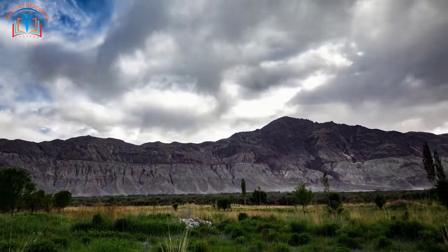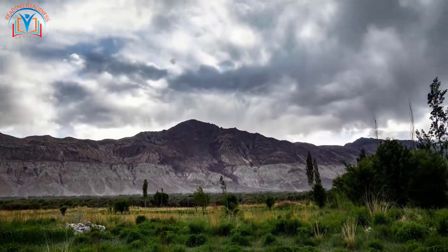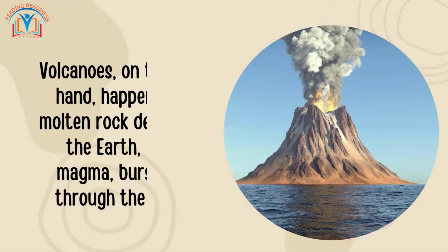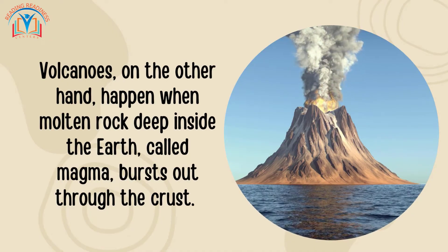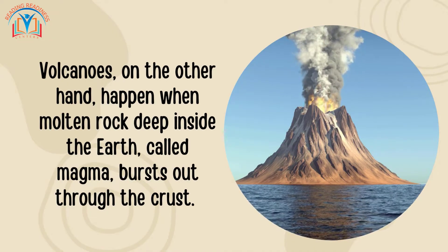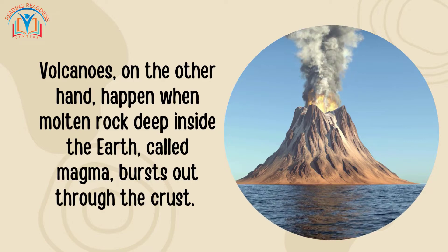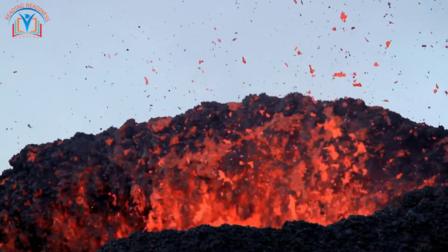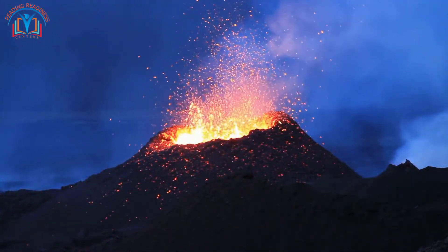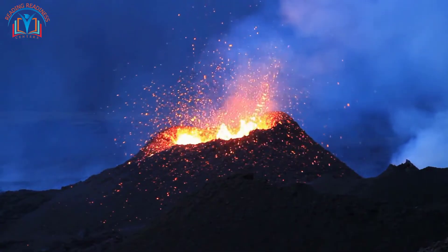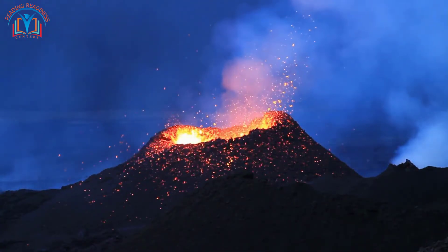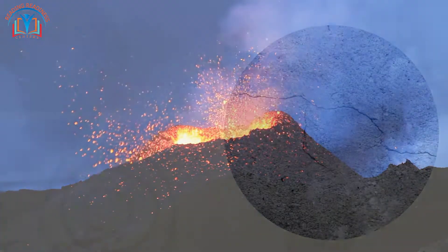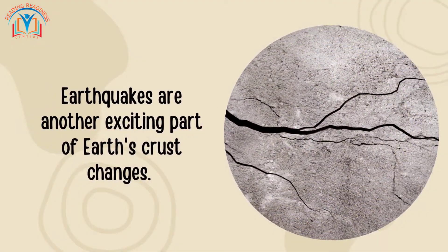Mountains are formed when plates collide — the force of the collision pushes the rocks upward, creating tall peaks. Volcanoes, on the other hand, happen when molten rock deep inside the Earth, called magma, bursts out through the crust. It's like a fiery mountain that erupts with hot lava. Volcanoes are also formed at plate boundaries when molten rock from the Earth's mantle rises up to the surface and erupts.